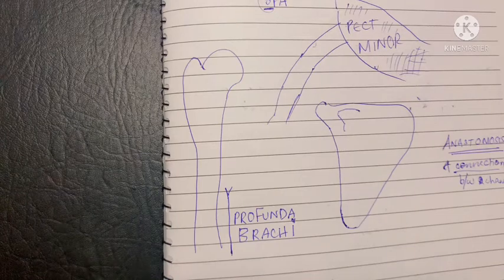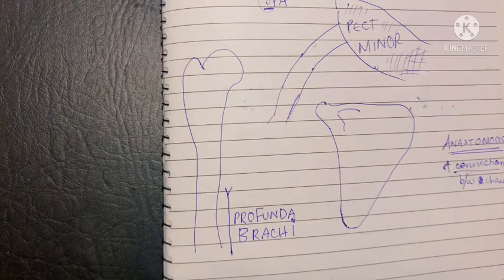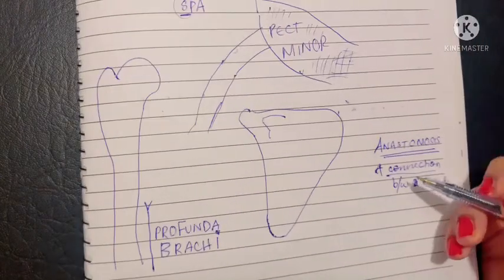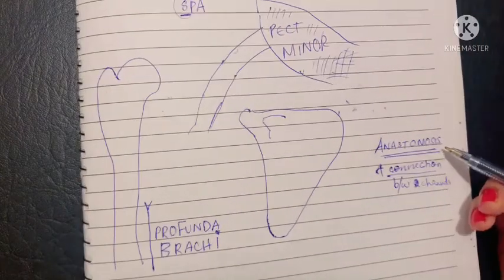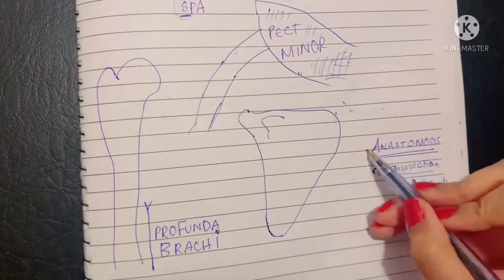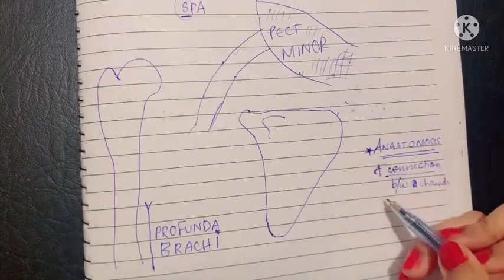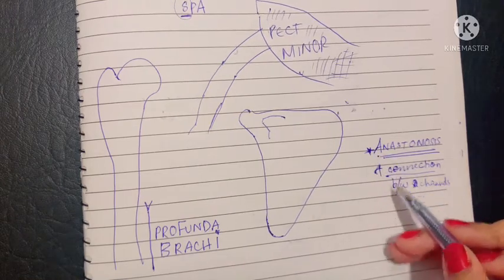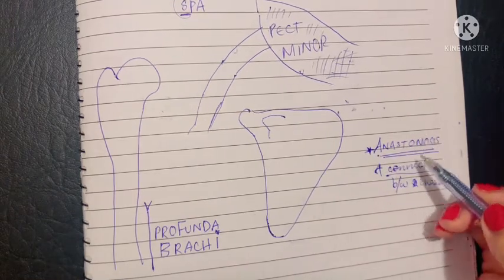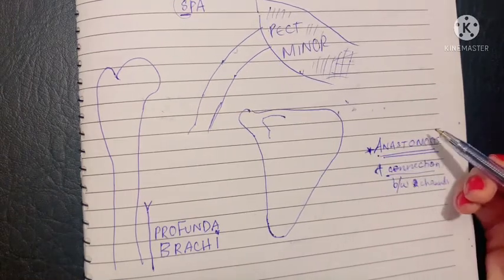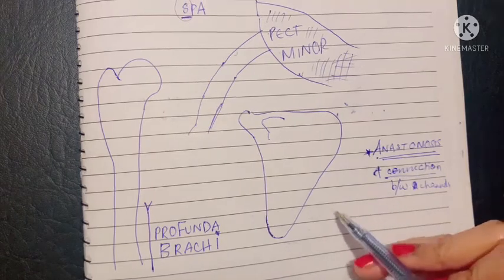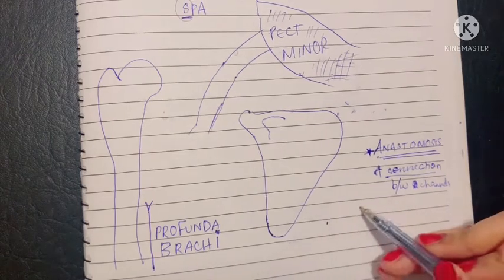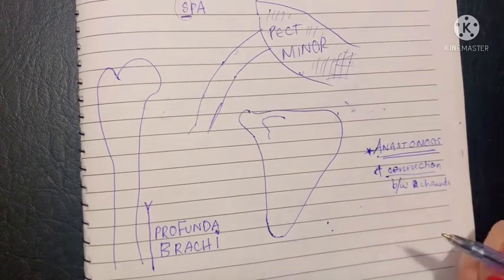Before we start the discussion of the third part — branches of the axillary artery — I would first like to let you all know that the word anastomosis will be repeated. What anastomosis means is a collateral channel or a bypass channel that links up two different sides.